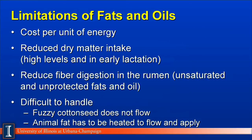Certainly, besides all the advantages, there are limitations associated with fats and oils. The biggest one is their cost per unit of energy — we'll discuss this a bit later. Second, at very high levels we can reduce total ration dry matter intake. Generally, values over 8% will have a negative effect on dry matter intake, tells the cow to stop eating, and data would indicate that early lactation cows do not respond well to added fats and oils. We can also reduce fiber digestion in the rumen, especially if we're feeding unsaturated and unprotected fats and oils. And finally, fats and oils may be difficult to handle — for example, fuzzy cottonseed does not flow due to its physical characteristics, and if we want to pump animal fats, they have to be heated to liquefy before we can apply them to feeds or in the TMR.